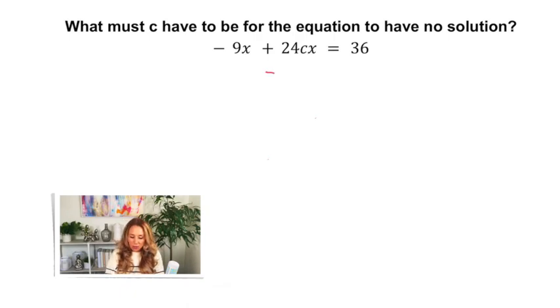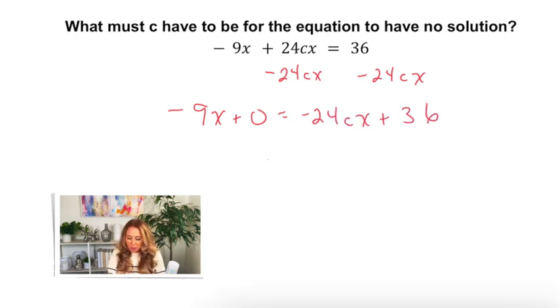So what I'm going to do is I'm going to move the 24cx to the other side. So essentially I have negative 9x plus zero, because if there's nothing with a negative 9x that implies it's like adding a zero. So great, my constants are different. That's what I wanted. Now I'm going to need these coefficients to be the same. So essentially I need that negative 24c to be equal to negative 9. And then I can find out what c is. Obviously it's going to be a fraction.